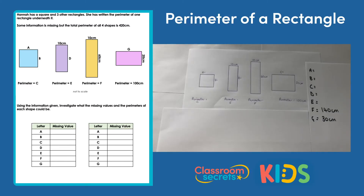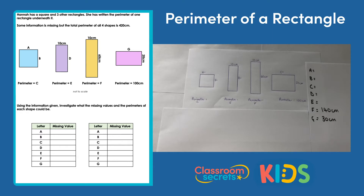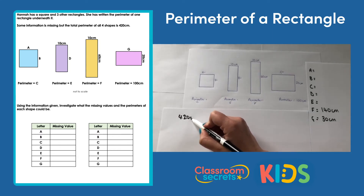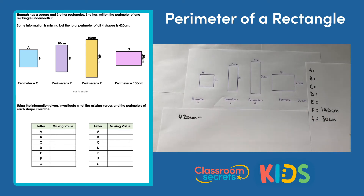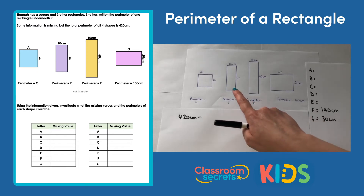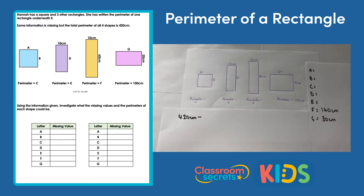So the value of F is 140cm. We now have the value of F, which is 140cm, and the value of G, which is 30cm. We can use that information to calculate the missing values for the first two shapes. We know that the total perimeter is 420cm, so we can subtract the perimeter of the known shapes to leave the perimeters of the two remaining shapes.